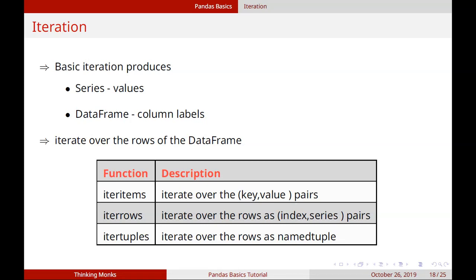Hi friends, how do we iterate in Pandas? How do we iterate in a Series? How do we iterate in DataFrames? If you iterate in a Series, we print one value. If you iterate in a DataFrame, we print the column labels.